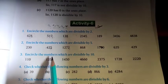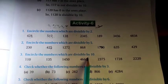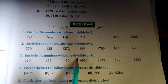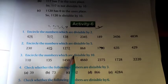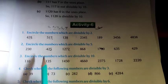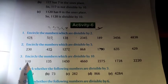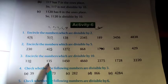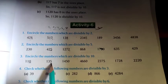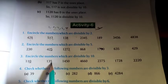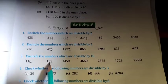Question number 3: encircle the numbers which are divisible by 10. The rule of divisibility by 10 is that if in the ones place the digit is 0, then that number is divisible by 10. The number 110 has 0 in the ones place, so it is divisible by 10. The number 135 is not divisible by 10 because in the ones place the digit is not 0.